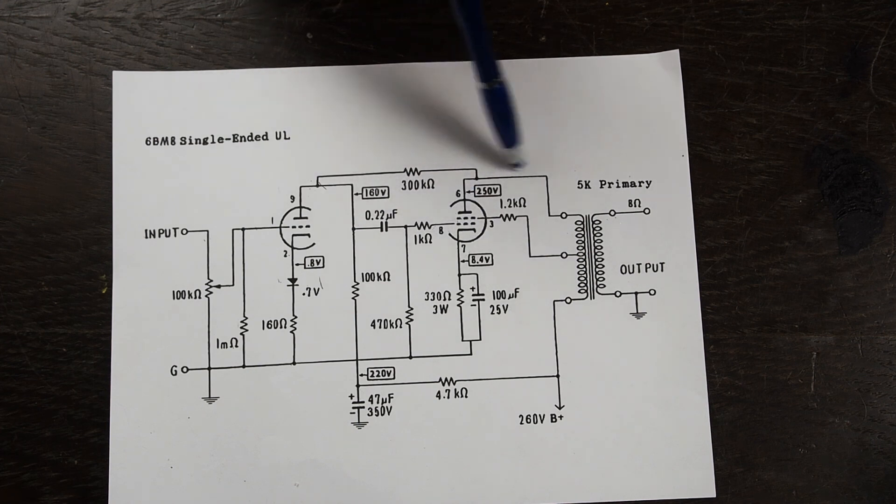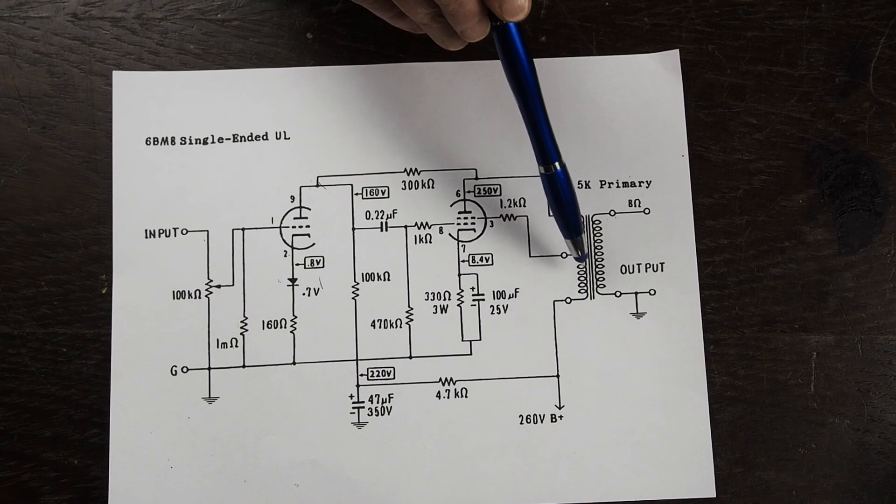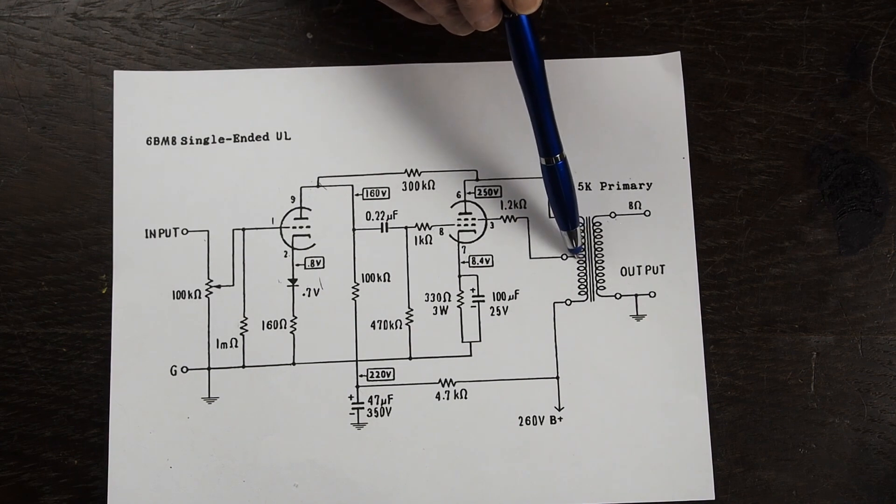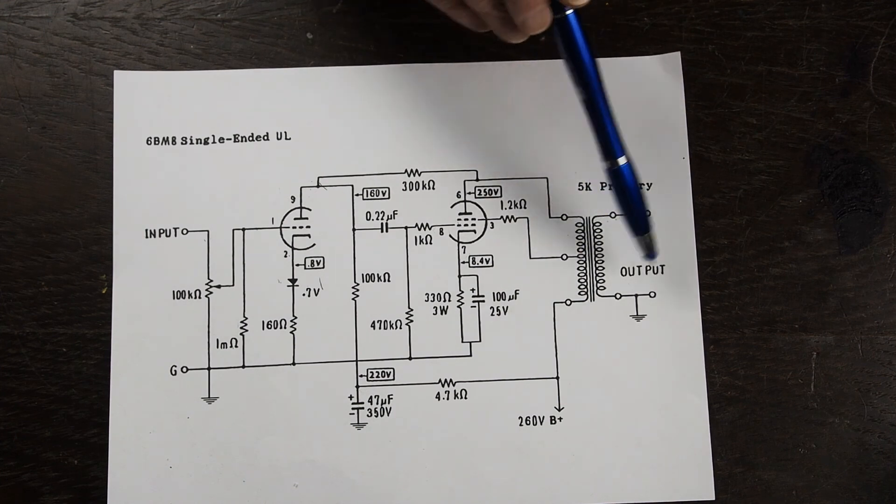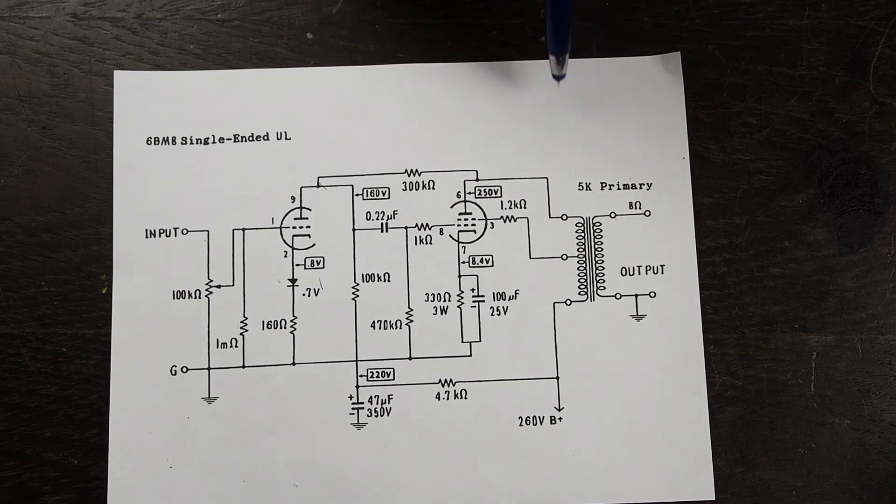Which creates an AC signal which is the sound in the power transformer which is then stepped down from 5000 ohms to 8 ohms to match the speaker impedance and drive the speakers.